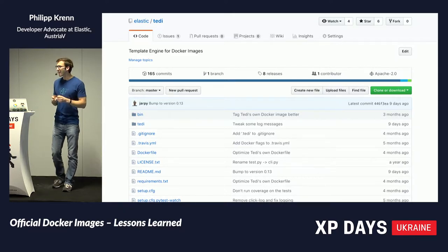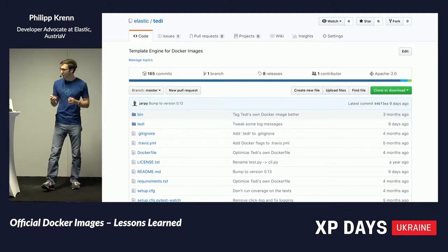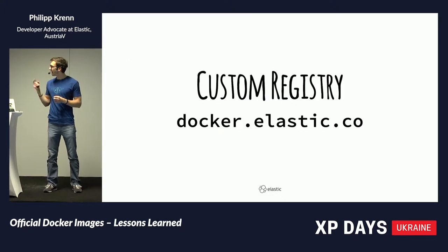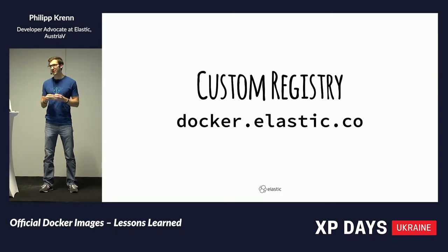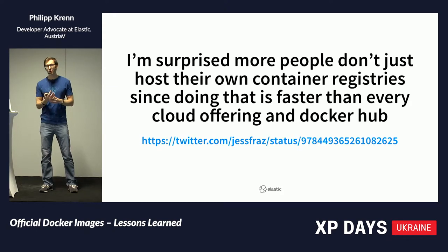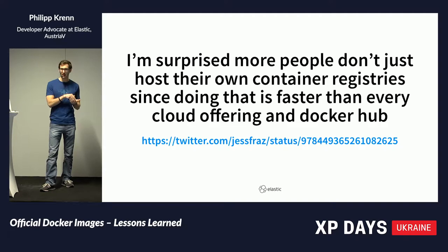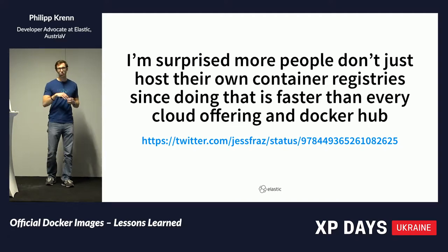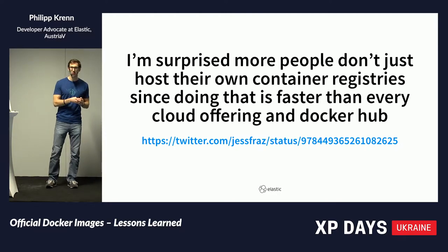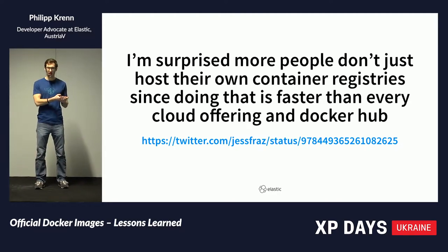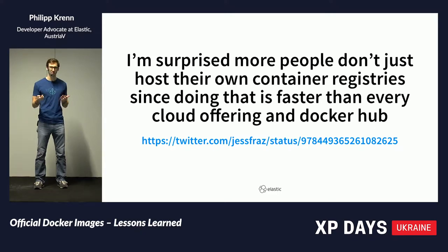We also have our own registry — docker.elastic.co is where our registry lives. I really like this tweet that some people are confused why there aren't more custom registries. We totally agree, especially two years ago Docker Hub was not super stable — every now and then it was unavailable or slow. Also, we use Docker images for our own cloud service, so we always needed our Docker images to be available and fast to download. That's why we have our own Docker registry.